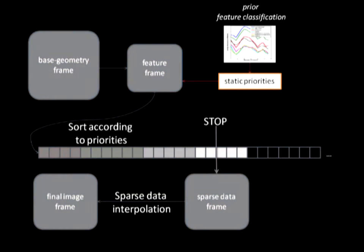In an offline step, we have evaluated the impact of different feature types on the image quality. We use this impact value as a priority lookup table to weigh the pixels of the feature frame. These pixels are subsequently considered as a queue, which is sorted according to its priorities. The queue is then processed until the time to generate a frame runs out. Finally, a sparse data interpolation scheme is applied to generate the final image.